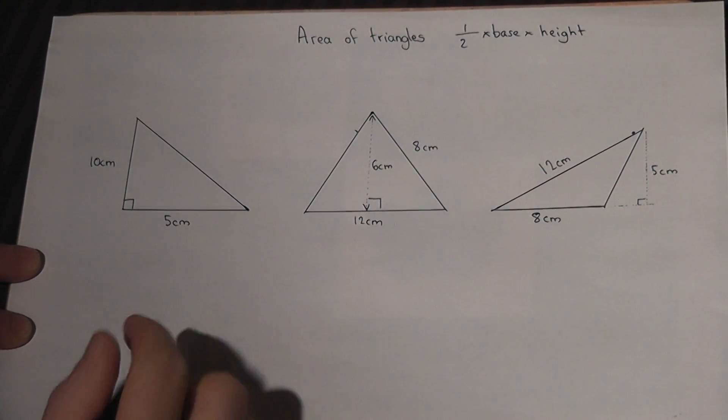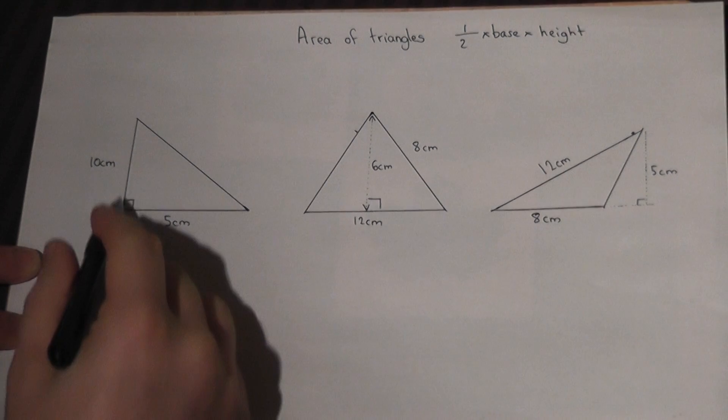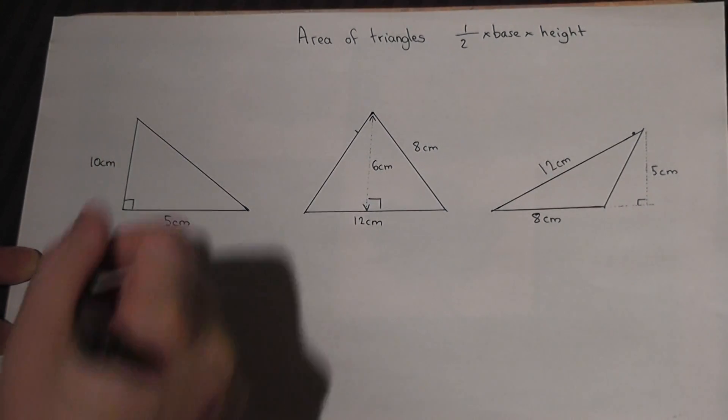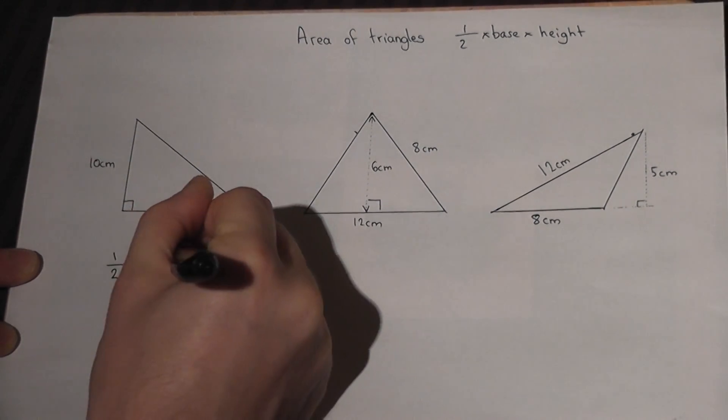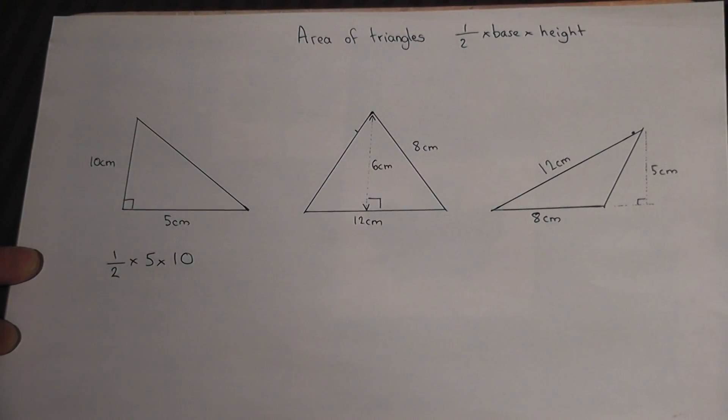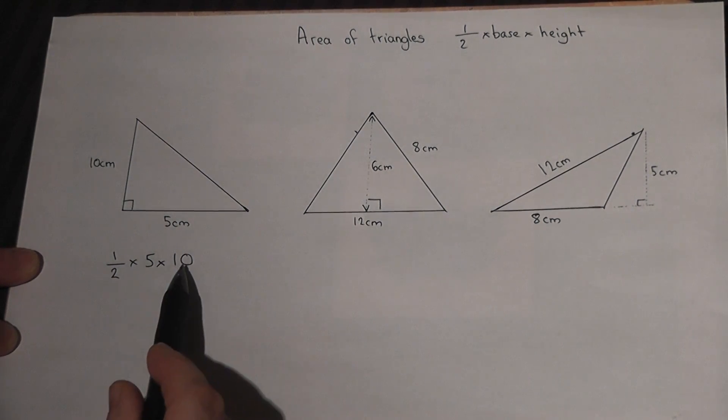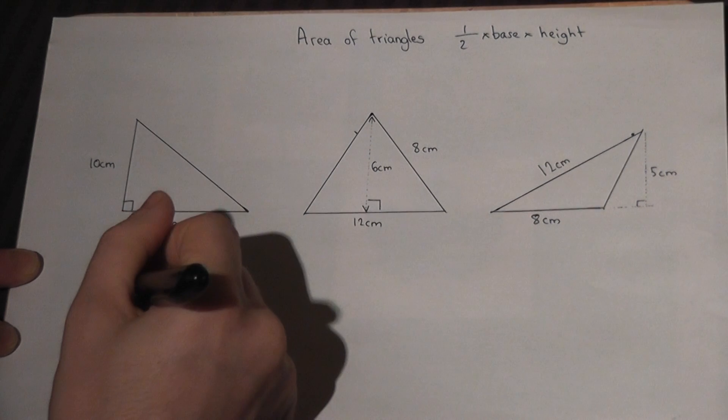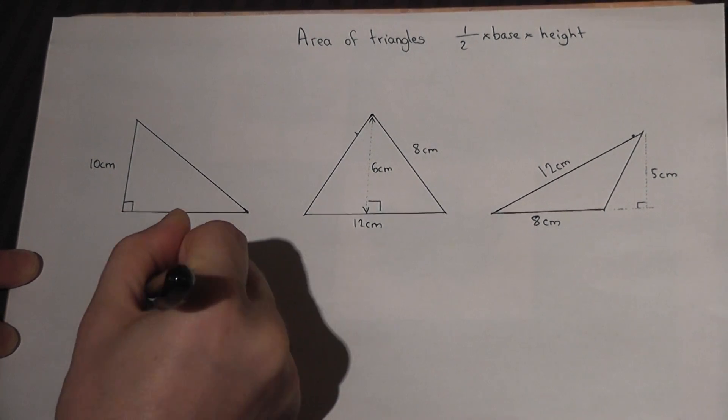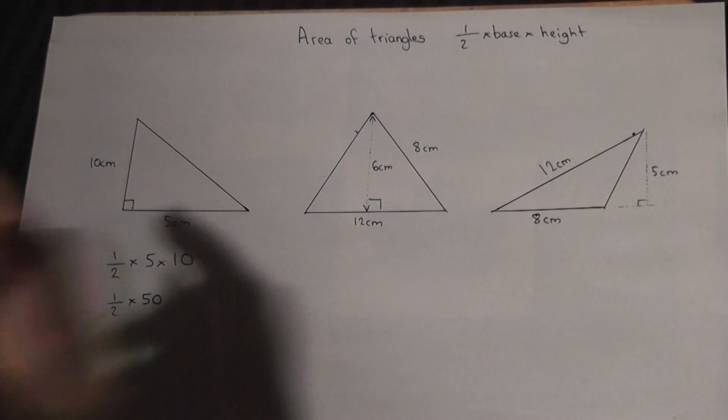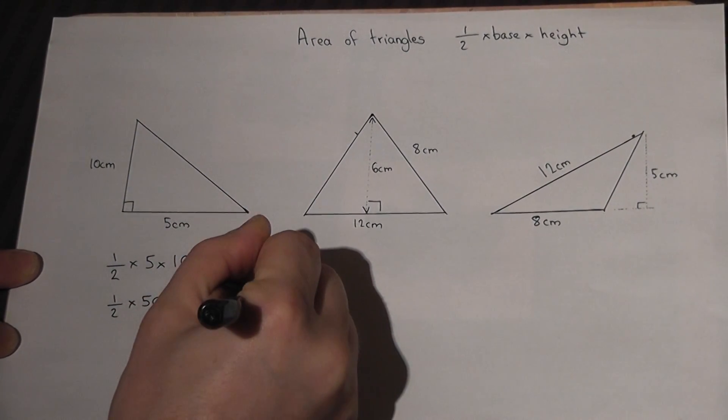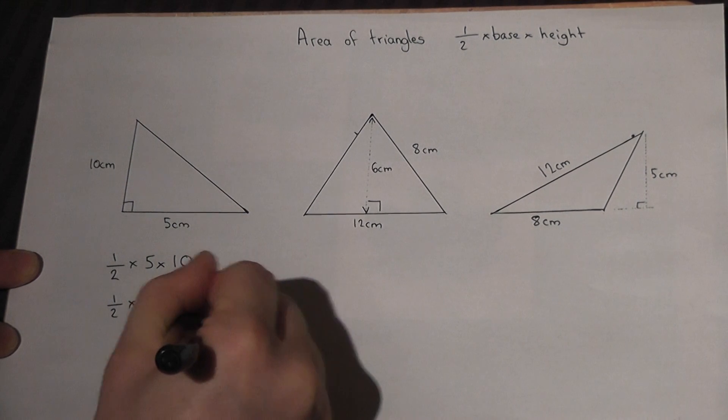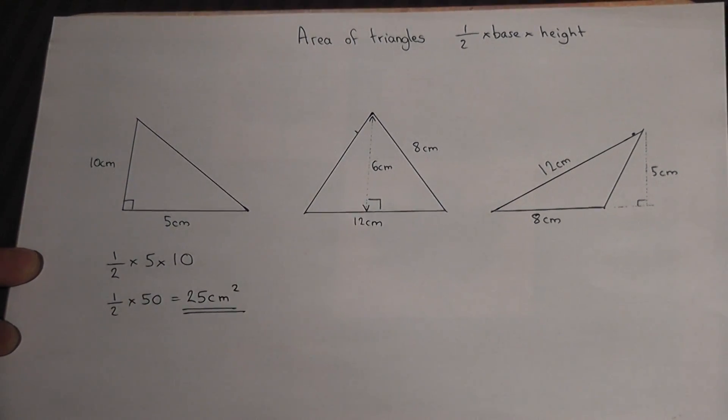Now in the first one, the base is 5, the height is 10, so a half times 5 times 10. You've got various options here. 5 times 10 is 50, so it's a half times 50, and a half of 50 is just 25 centimeters squared. Don't forget the units.